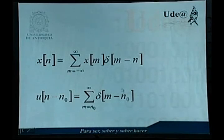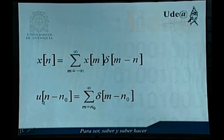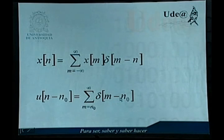La última propiedad que veremos sobre estas funciones es la siguiente. Antes habíamos visto cómo se podía representar la función de impulso unitario a través de la función escalón unitario. Ahora veamos cómo podemos representar la función escalón unitario a partir de una suma de funciones impulso unitario. En este caso, la función de escalón unitario en n menos n sub 0 va a ser igual a la sumatoria desde m igual a n sub 0 hasta infinito de delta de m menos n sub 0. Estas cuatro propiedades son muy importantes para lo que vamos a ver en próximos módulos. Vamos entonces a ver unos ejemplos de cómo se utilizan esas propiedades.